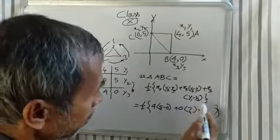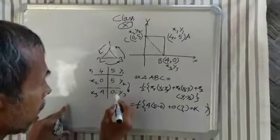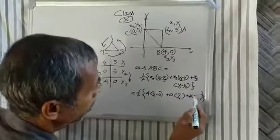Next, x3 is 4, so we have 4 into (y1 minus y2).